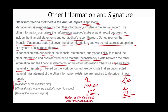Finally, we have the signature block, which includes the signature of the audit firm, the city where the report is issued, and the date of the report. The date should be no earlier than the date on which sufficient appropriate evidence was obtained — essentially, when we last gathered evidence. If something occurs after that date, we may need to issue a dual-dated report covering that specific event, while our main work concluded on the original date.